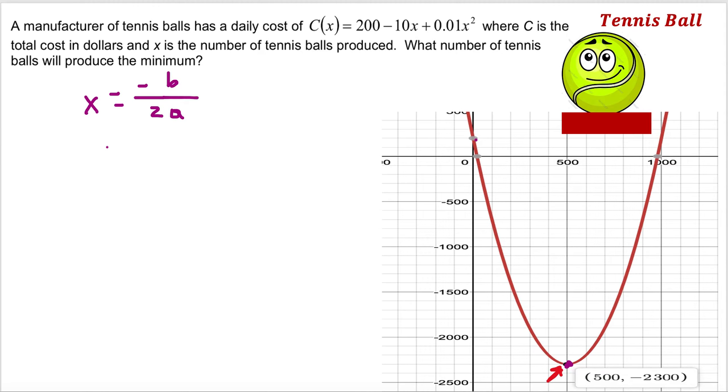If we plug in everything here, b in this case is going to be minus 10. Because it's negative, it's just 10. And a is 0.01, but 2 times a is 2 times 0.01.